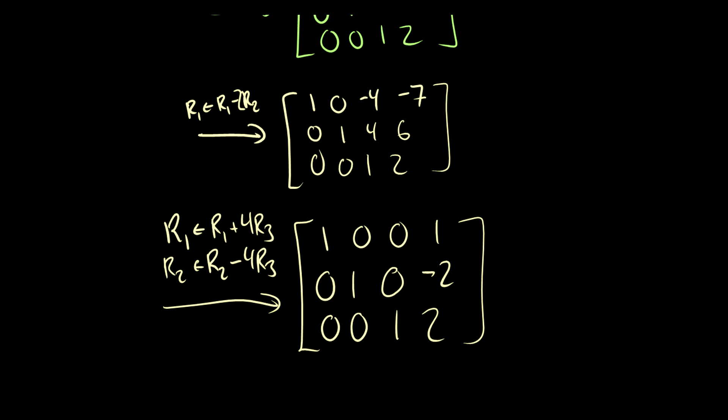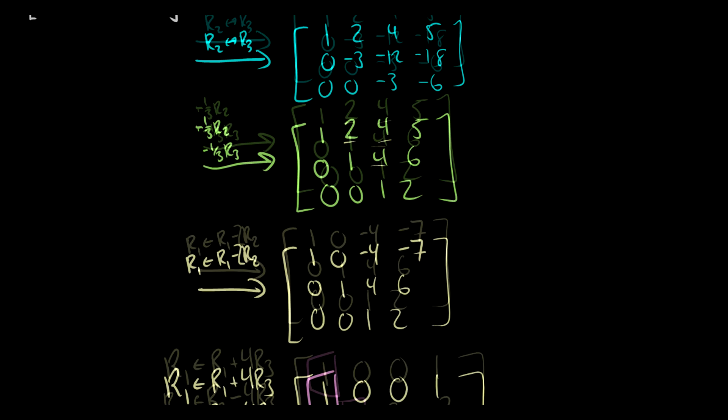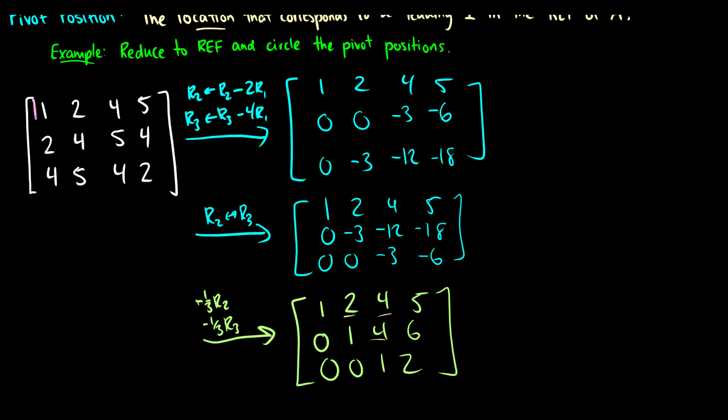Now the pivot positions are where our leading ones are. We see these positions there. Where do these positions correspond to in the original matrix? Well, these are the pivot positions. These will be in the same place. These are where your pivot positions are.